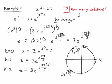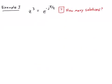We've seen two examples — let's try a third. I strongly encourage you to pause the video and try to solve this problem on your own before looking at my solution. We're looking to solve z cubed is equal to e to the minus j pi over four. We ask ourselves how many solutions do we expect — it's a third order polynomial, so we expect three unique solutions.